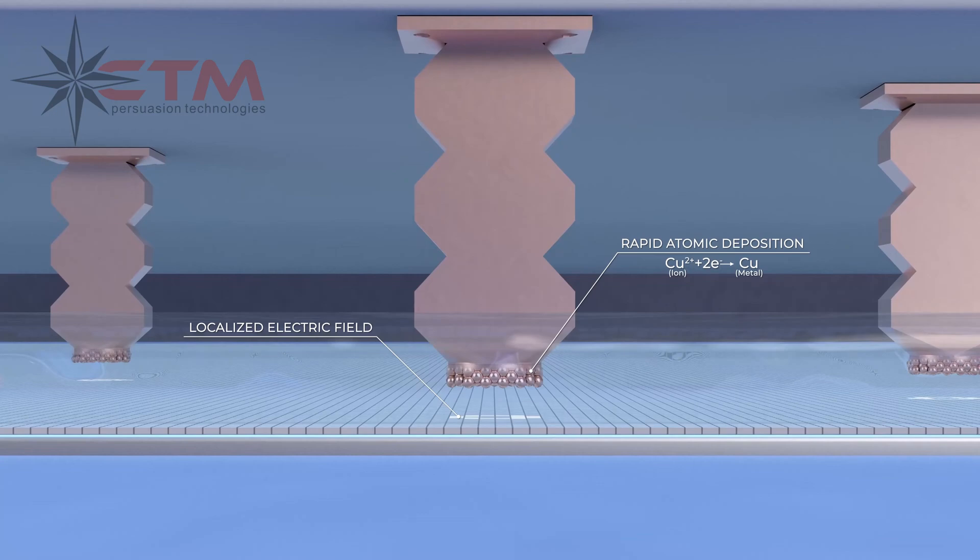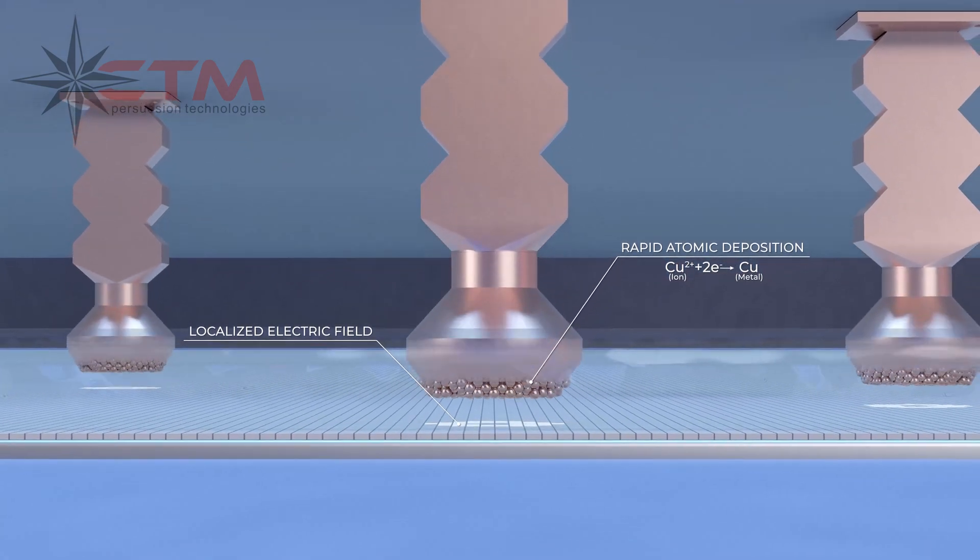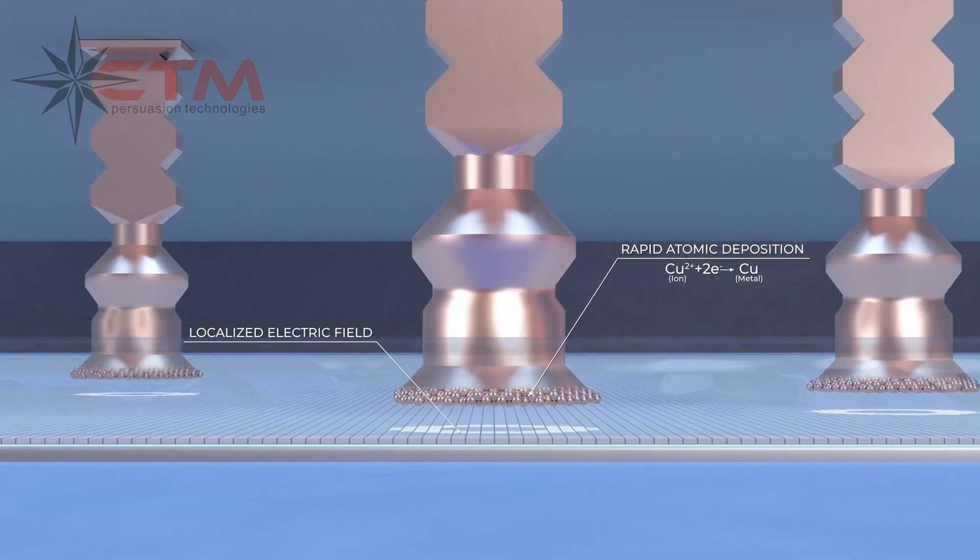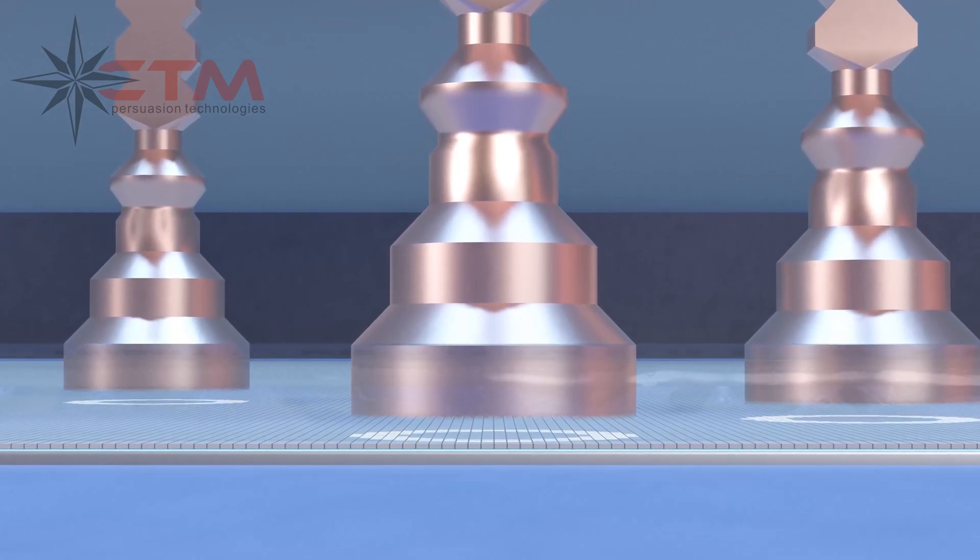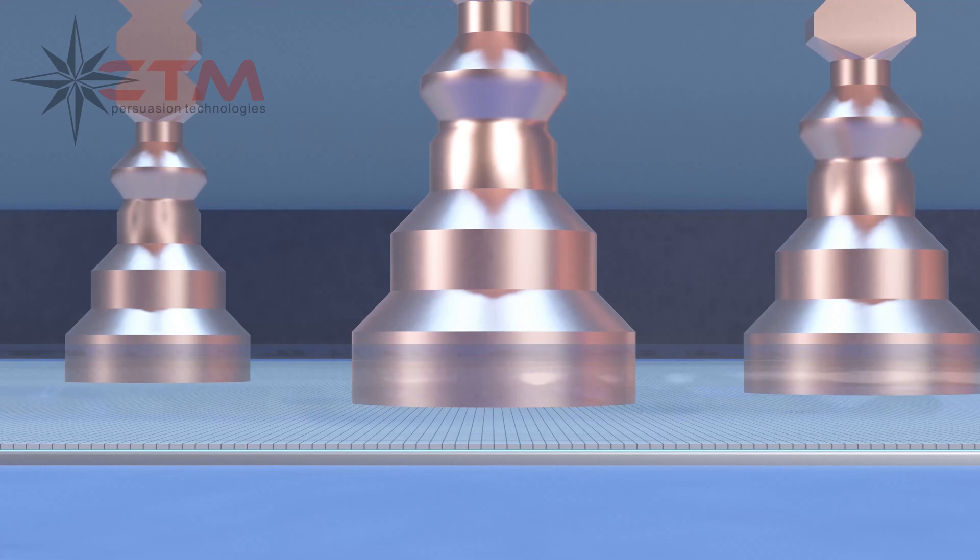Complex geometries are achieved by adjusting the pattern or image of active pixels on the printhead. A closed feedback loop monitors the build at each pixel, ensuring part quality and providing records for part certification.